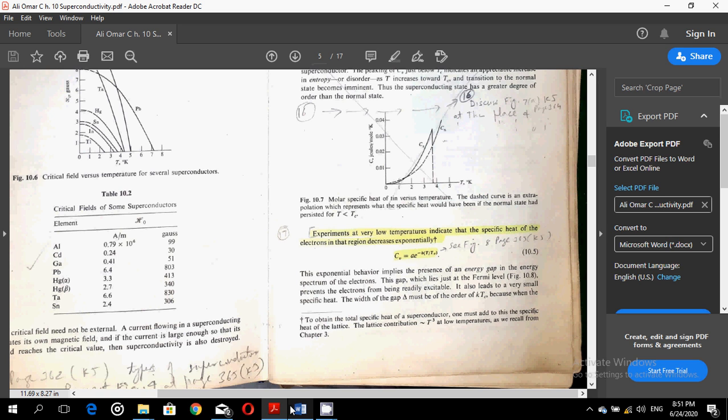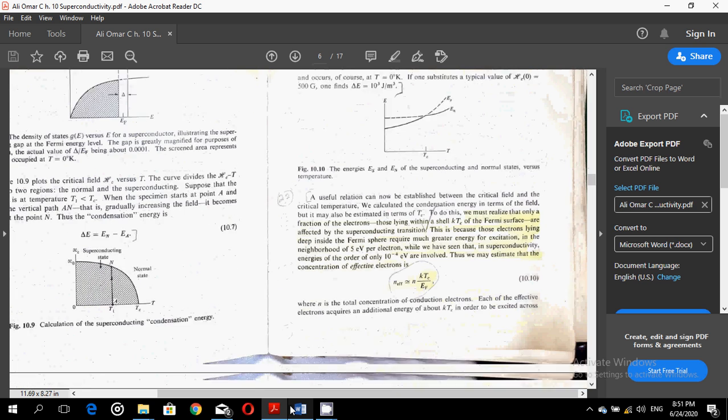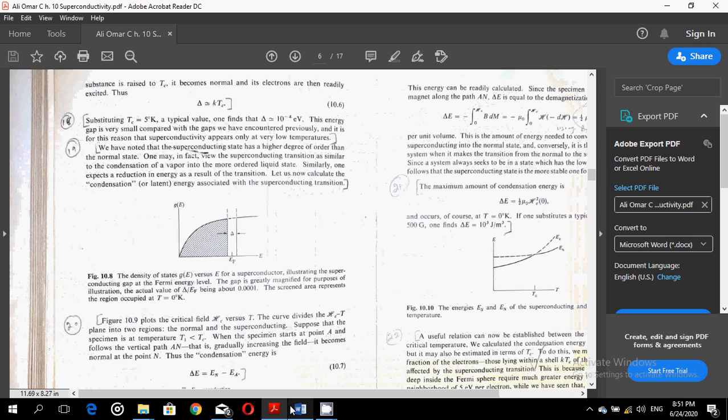It also leads to a very small specific heat. The width of the gap delta must be of the order of K Tc because when the substance is raised to Tc, it becomes normal and the electrons are then readily excited. So you can see here the suggested band gap at the Fermi level in figure 10.8, and whose width has been expressed in equation 10.7, that is delta is approximately of the order of K into the critical temperature.